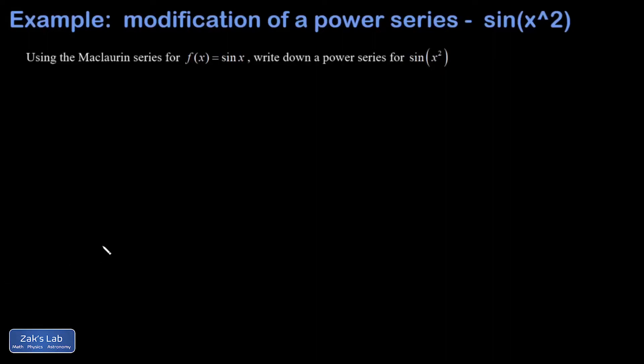In this problem, we're attempting a simple modification of a series that we discovered before by finding the Maclaurin series for the sine function. We're going to use that series to figure out a new one, the power series for sine x squared centered at zero.